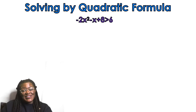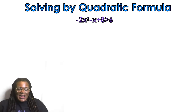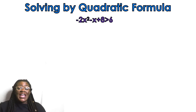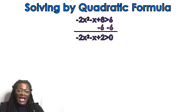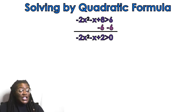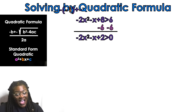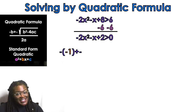We have three examples. Example number one is: negative 2x² minus x plus 8 is greater than 6. We're using the quadratic formula, and to use it you always want to make sure your problem is set equal to 0 at the beginning. Once it is set equal to 0, you plug it into the formula.